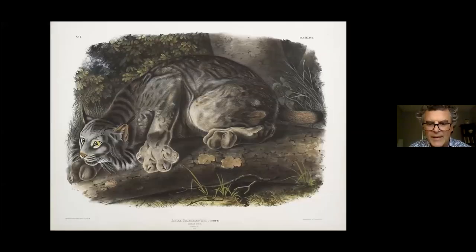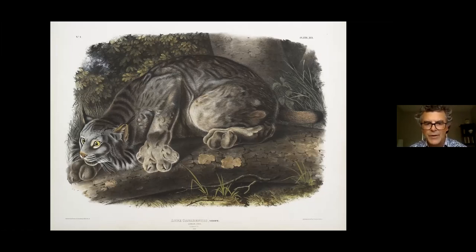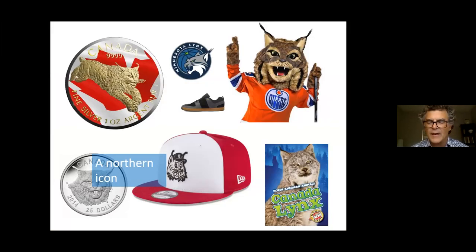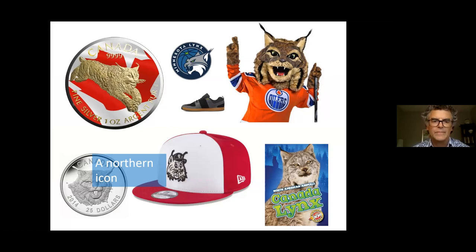Here's a painting of a Canada lynx by Audubon — another one of the players on the stage of Algoma. This is an animal familiar to everyone. I want you to notice the large paws especially. This is a northern icon — a secretive forest animal from the northern coniferous forest, well known and culturally identified as a northern animal.